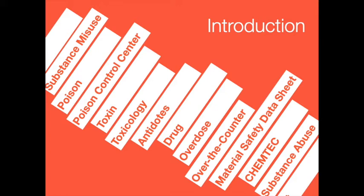A toxin is a poisonous substance produced by microorganisms that can cause certain diseases but is also capable of inducing neutralizing antibodies or antitoxins. Toxicology is the scientific study of poisons and antidotes and how they affect people. Some poisons, including many medications, are not deadly in small doses but become dangerous in larger amounts. When a dangerously large amount of a drug is taken, this is called an overdose. Poisons can be solid, liquid, spray, or fumes, gases, and vapors.